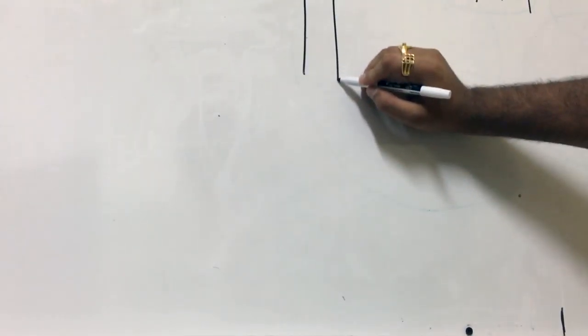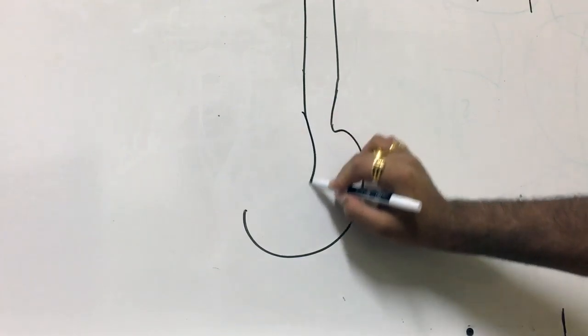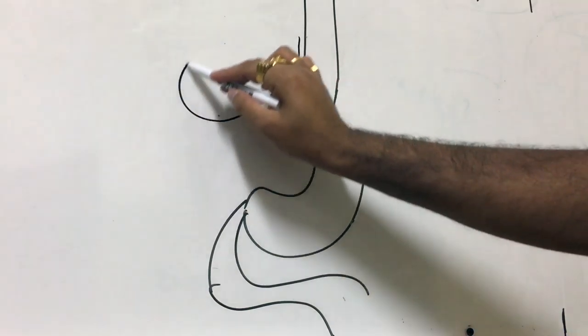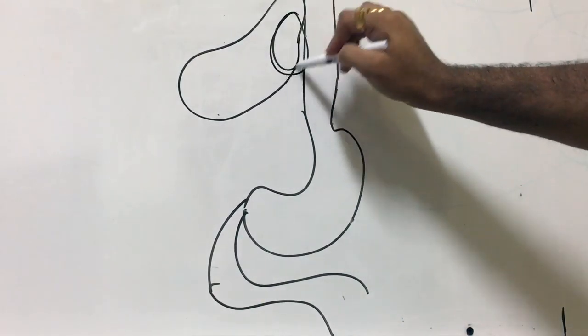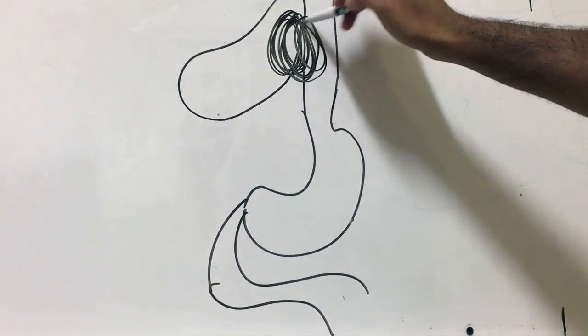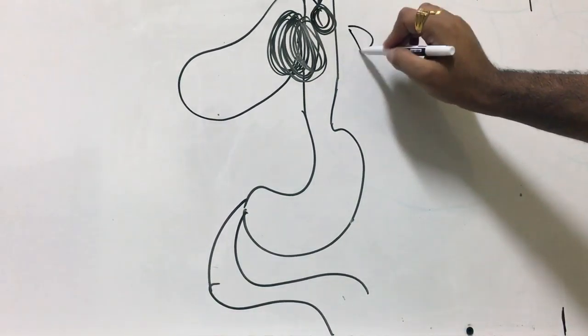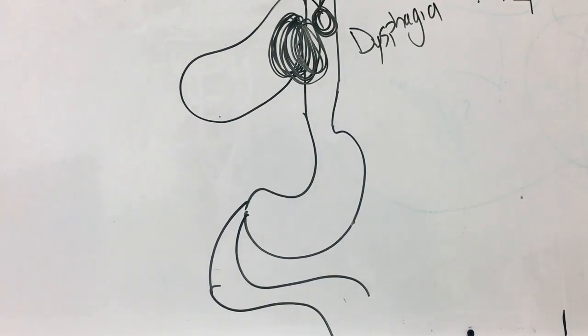The left atrium compresses the esophagus as the food bolus is going down. If the left atrium is enlarged and pushing in, a bolus of food would get stuck. This is why a patient might complain of difficulty swallowing.